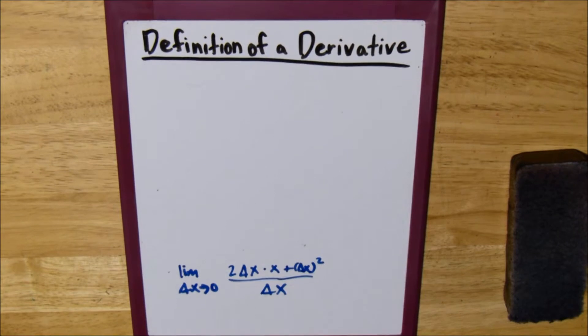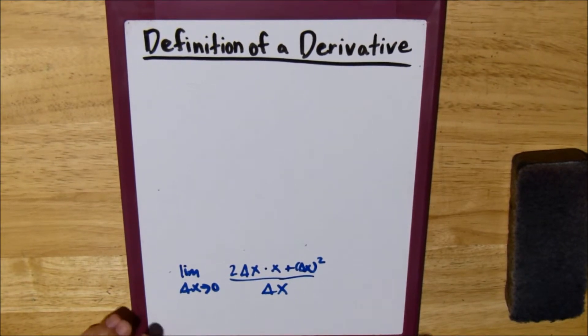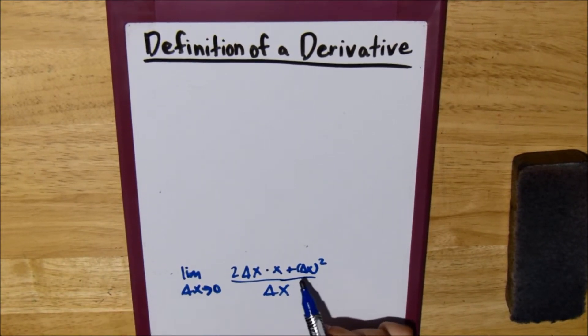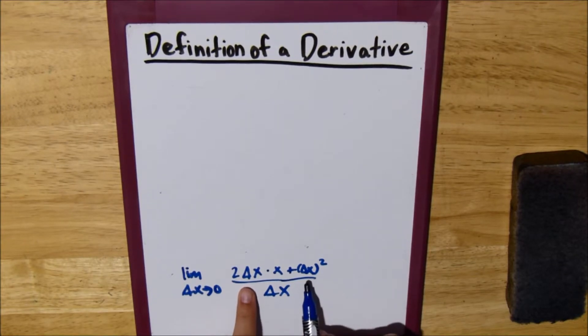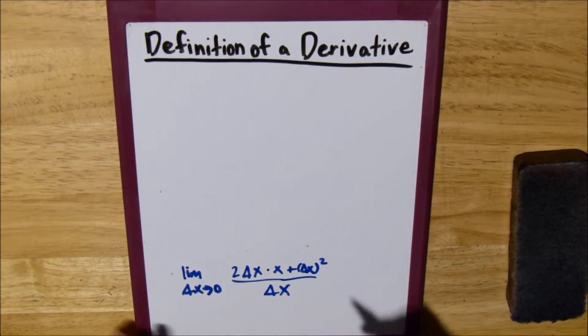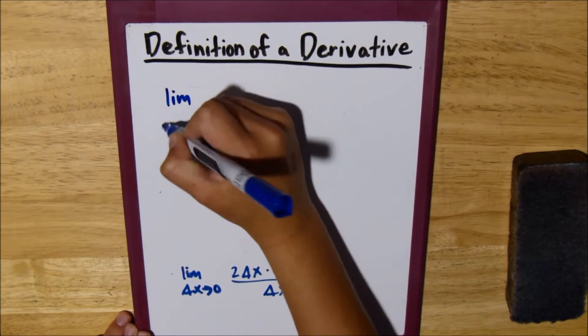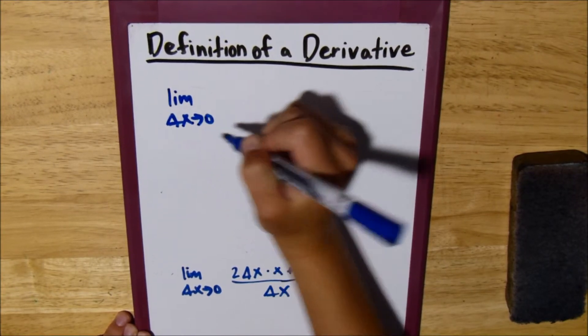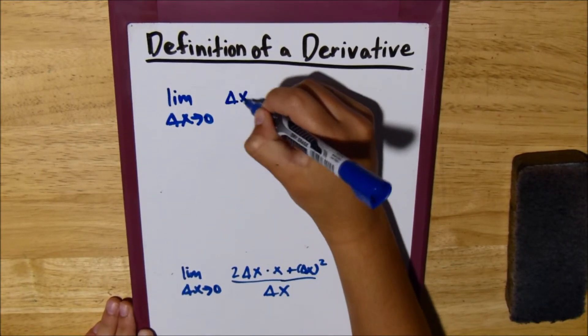So, what I encourage you to do at this point is to factor out delta x from both parts of the numerator, so you can cancel it with the denominator, and end up with something you can actually plug in 0 for.